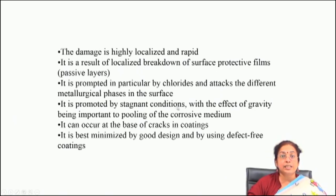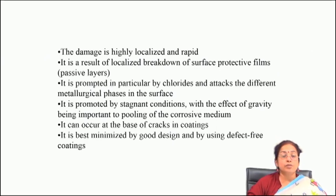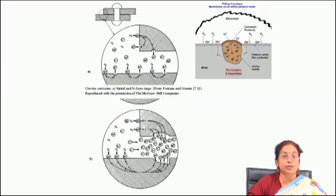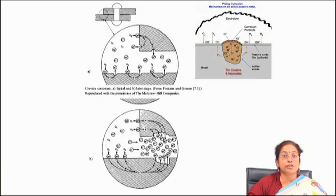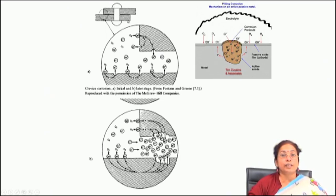Pitting corrosion is prompted in particular by chloride and attacks different metallurgical phases on the surface. It is promoted by stagnant conditions, with gravity playing an important role, and it can also occur at the base of cracks in a coating. It is best minimized by good design and by using defect-free coatings. You have to choose the material which forms a highly protective film, particularly in the environment where you are trying to protect the surface. If there is a crevice region, that further promotes or aggravates the pitting attack rate, as in the case of a nut-bolt combination exposed to a chloride-containing environment.